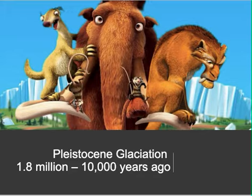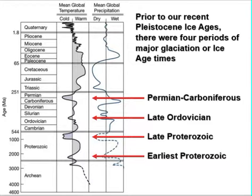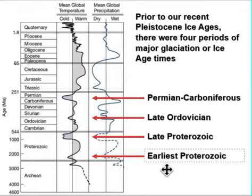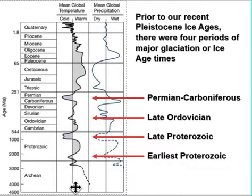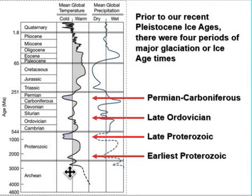First let's look at ice ages. The most recent ice age was in the Pleistocene and ended about 10,000 years ago, but that was not the only ice age — just the most recent one. We've been having ice ages since the Proterozoic. On this chart, the line in the middle represents average temperatures. Temperatures where the curve dips to the left are colder than normal and represent ice ages, while the right side represents warmer-than-normal greenhouse times.